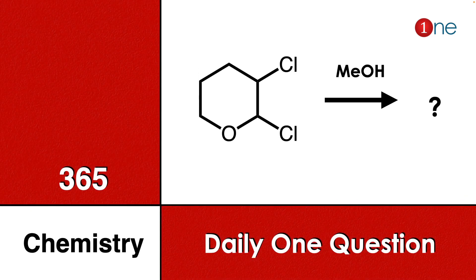Welcome to One Chemistry. This is the 365 Chemistry series — one question daily for you. Here we have a cyclic ether with chlorine at the second and third positions. You react it with methanol, and you have to find the final product.